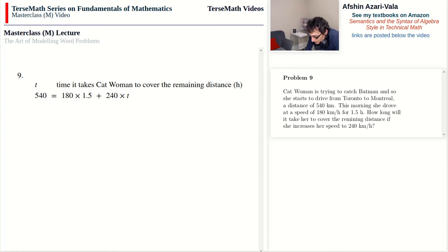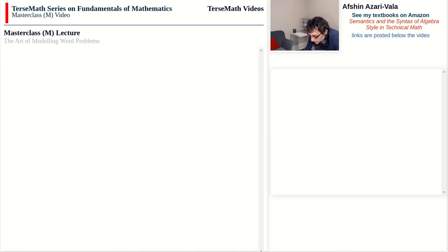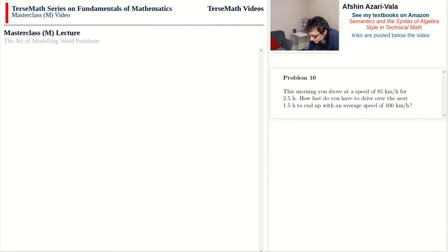Problem 10: this morning you drove at 85 km/h for 2.5 hours. How fast do you have to drive over the next 1.5 hours to end up with an average speed of 100 km/h? For average problems, the starting point is always: average = sum of data ÷ number of data. The unit of average is km/h — kilometers on top, hours on the bottom — so we use total distance divided by total time.